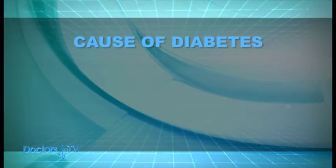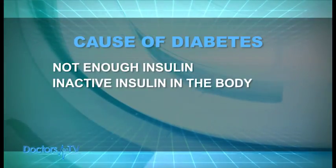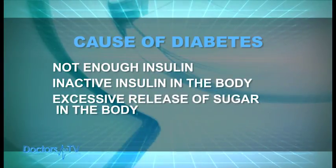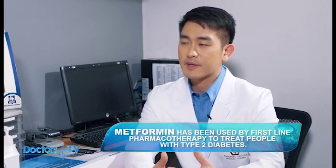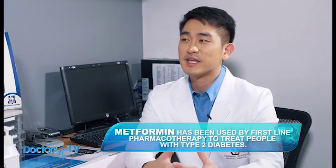Ang daming gamot sa diabetes — ano ba ang pinagkakaiba ng mga gamot na ito? Iba-iba kasi ang tina-target ng mga gamot na ito. May iba't-ibang cause kung bakit nagkaka-type 2 diabetes — kulang ang insulin, hindi epektibong insulin sa katawan, sobrang paglabas ng sugar sa katawan. Iba-iba yung target ng mga tablets, kung kanino mag-fit yung tablet, yun ang bibigyan ng ganoong klase ng tablet. May mga tablets ngayon na lumalabas na makakatulong sa weight loss. Ang madalas na binibigay bilang first line ay metformin — pinakamagandang gamot bilang first line. At hindi po ito nakakasira ng kidney tulad sa naririnig natin — safe ang metformin sa kidneys.